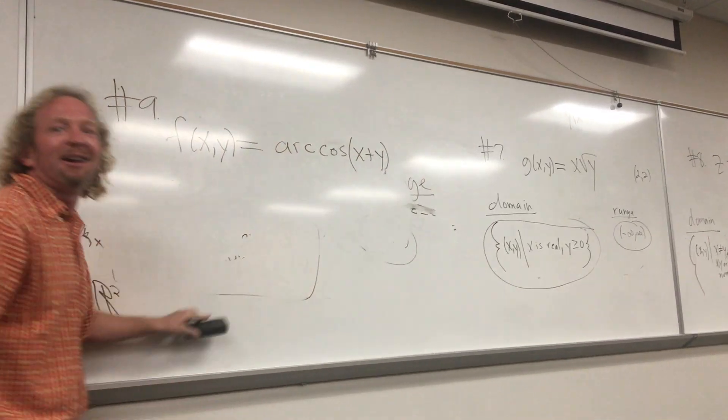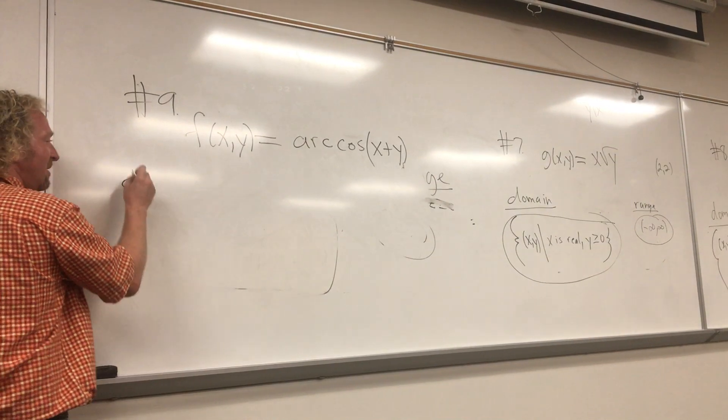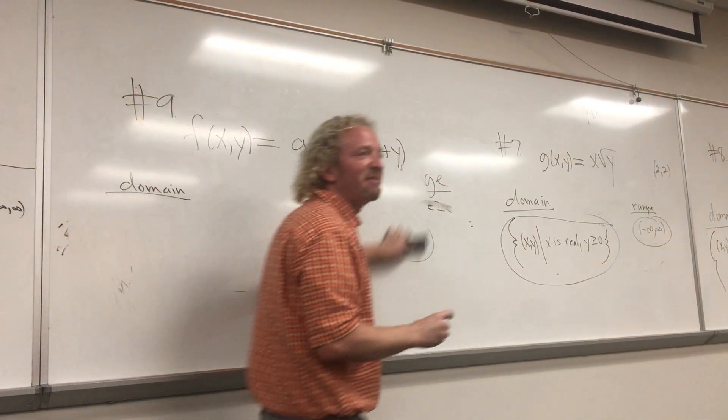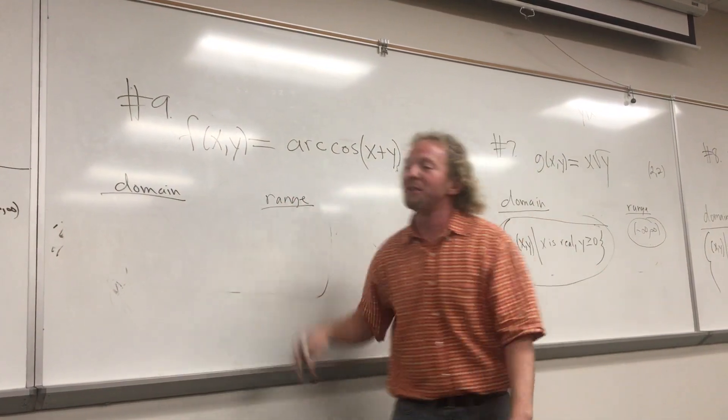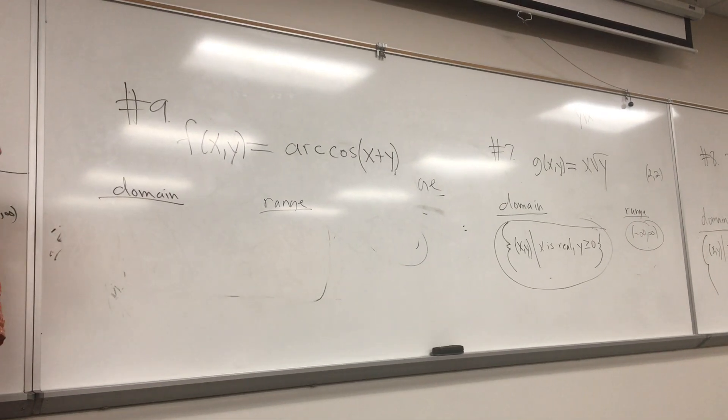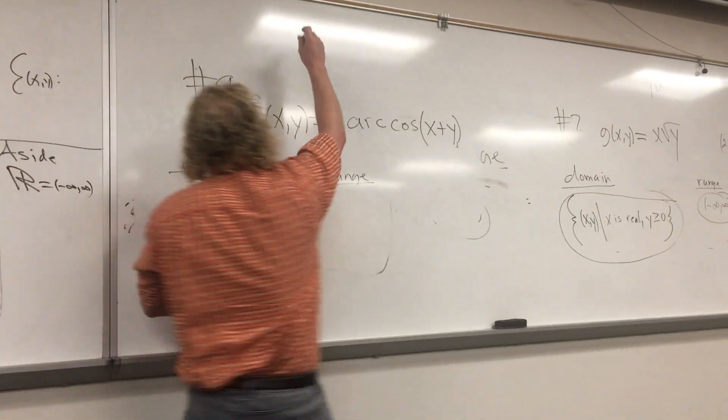Arc cosine of x plus y. So domain is minus 1 and 1. Is it? Okay, I have to think about it. Let's see. It's inverse trig? Yes, inverse trig. Let me think about it. Domain and range. If I give you a minute to write it down, then we'll work it out. So domain and range. It's one of the baby steps here, right? Up here, let's just think.